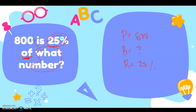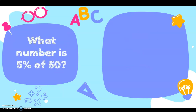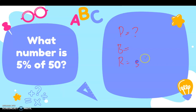Next: what number is 5 percent of 50? The missing is the percentage because the question asks 'what number is.' The rate is 5 percent, and the base is 50 because there is a word 'of' before the number. Therefore that is the base.